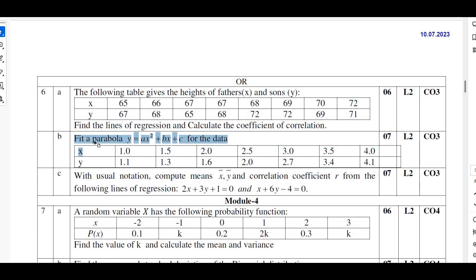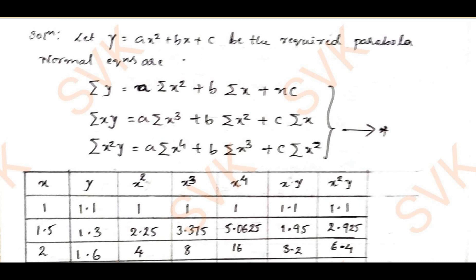Problem 6b: we need to fit a parabola y = ax² + bx + c for the given set of data. We will solve this using the least square method. Consider the standard equation y = ax² + bx + c as the required parabola. The normal equations are: σy = a·σx² + b·σx + nc; σxy = a·σx³ + b·σx² + c·σx; σx²y = a·σx⁴ + b·σx³ + c·σx².